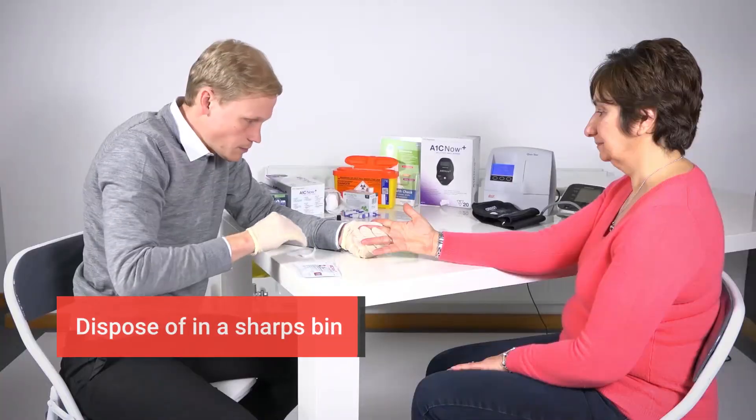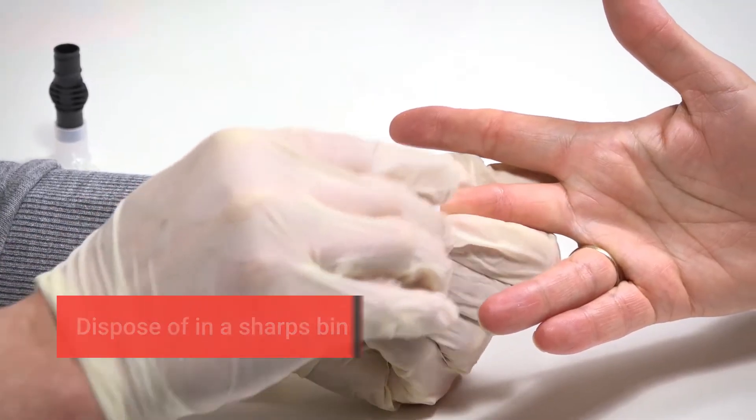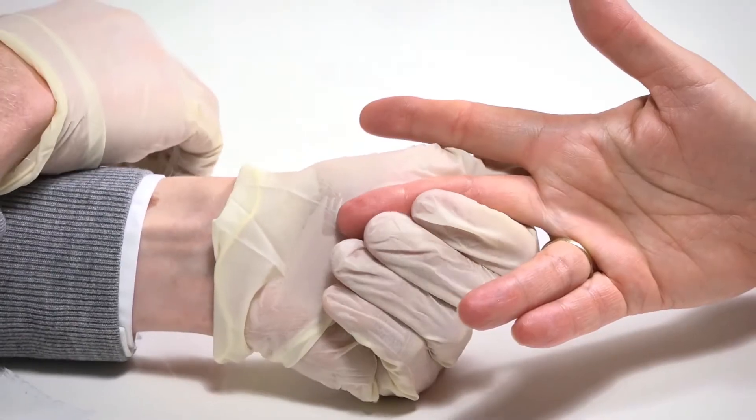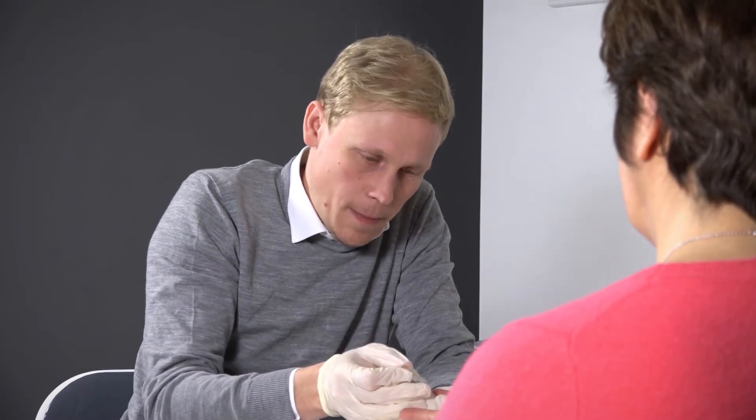Dispose of the used lancet in a suitable sharps bin. Wipe away the first drop of blood, as this may contain tissue fluid. Apply pressure along the finger, but don't press near the puncture site, as this may affect the sample.